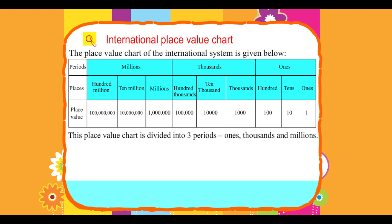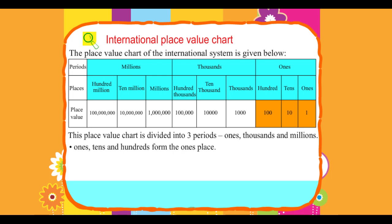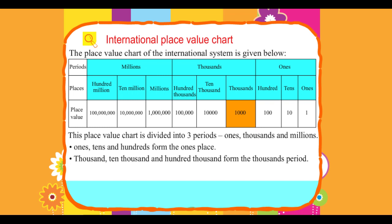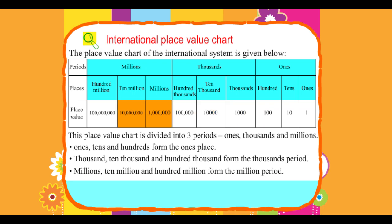The three periods are: Ones, Thousands, and Millions. Ones, Tens, and Hundreds form the Ones period. Thousands, Ten Thousands, and Hundred Thousands form the Thousands period. Millions, Ten Millions, and Hundred Millions form the Millions period.